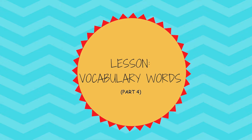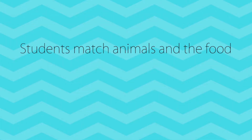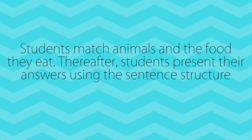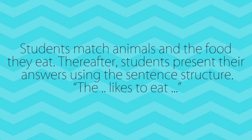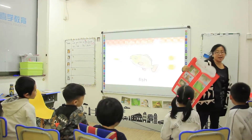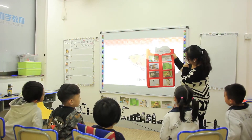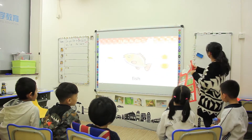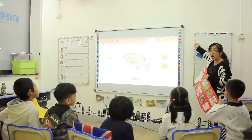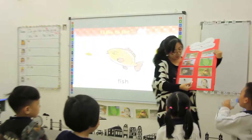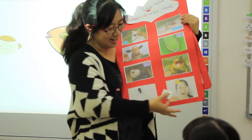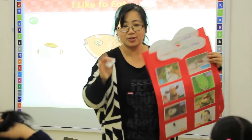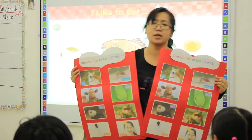Lesson vocabulary words: students match animals and the food they eat. Thereafter, students present their answers using the sentence structure 'The [animal] likes to eat [food].' On the poster you can see animals like mosquito, worm, bird, and spider. Animals like to eat something. Next, I'm going to provide you some food — for example, this is the grass. If you think Sunny likes to eat the grass...